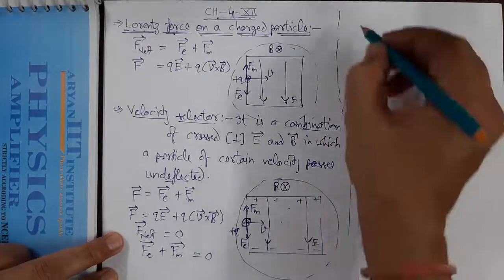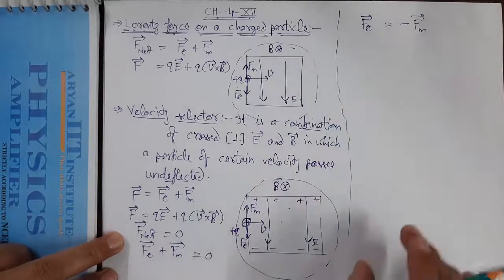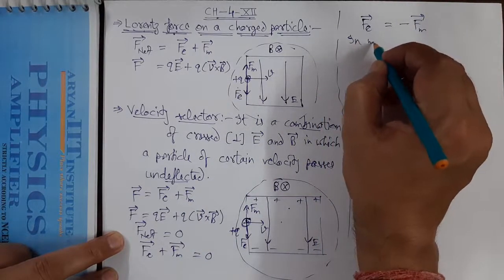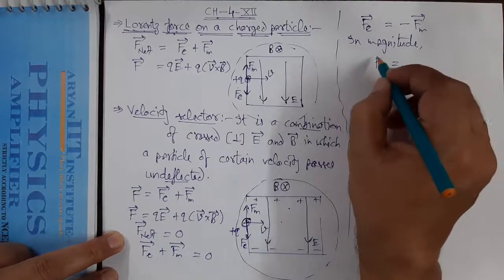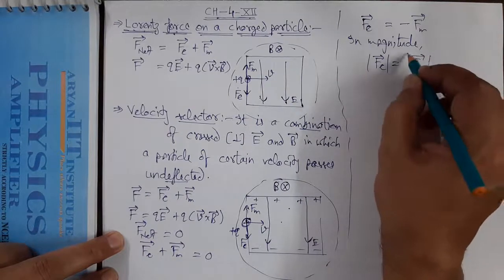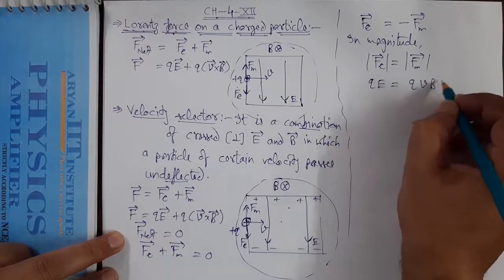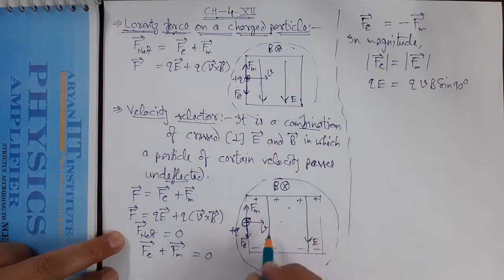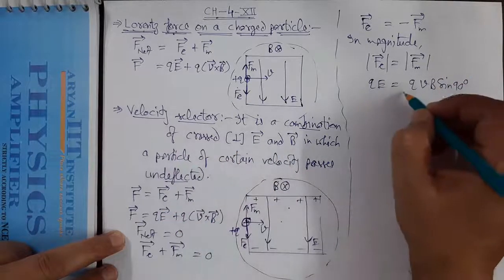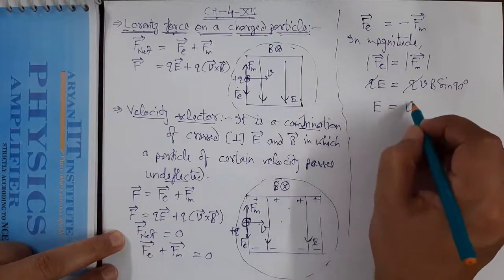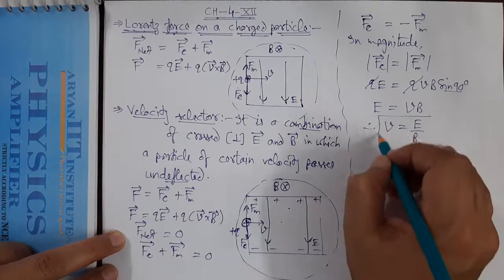Setting the magnitudes equal: electric force = magnetic force gives QE = QVB sin θ. Here θ = 90° since V and B are perpendicular, so sin 90° = 1. The Q cancels from both sides, giving E = VB, therefore the velocity of the undeflected particle is V = E/B.